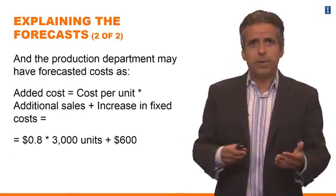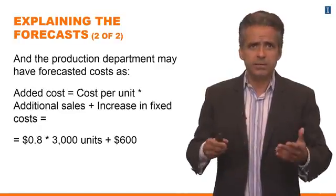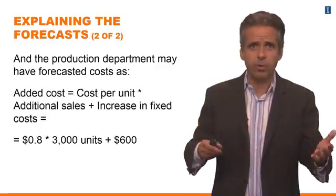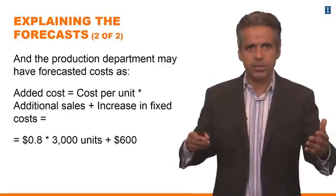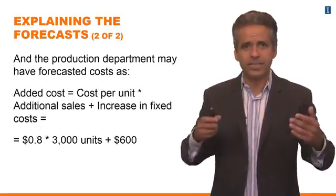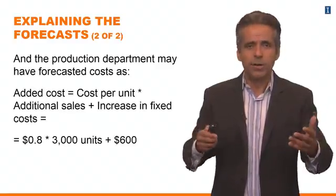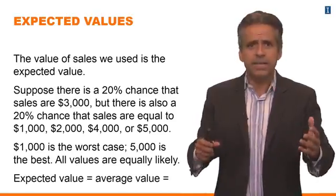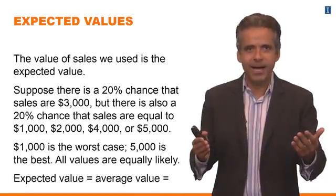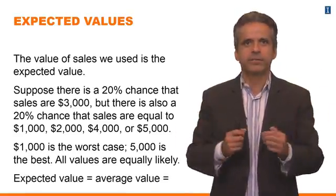The production department was probably responsible for forecasting the costs. The way the production department probably forecasted costs is by adding variable cost to fixed costs: cost per unit times additional sales, plus an amount of fixed costs. Every project is going to have some costs that don't depend on the amount you sell — we call those fixed costs. So this goes a little deeper on the numbers. Now let's think about uncertainty. The truth is that the marketing department is making a guess — trying to estimate what the most likely value is going to be for sales, for example.